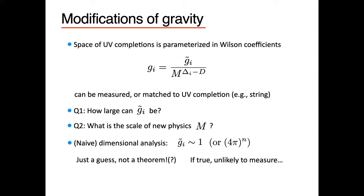There are general bottom-up questions we can ask: How large can these Wilson coefficients be? Is there any limit on their size? What is the scale of new physics? At least for one of these questions, there's a naive answer — naive dimensional analysis — which is the usual expectation that the dimensionless Wilson coefficient should be order one, meaning some power of 4π. But this is just a guess, not a theorem. Unfortunately, for Einstein gravity this means we're unlikely to measure these things any time soon.